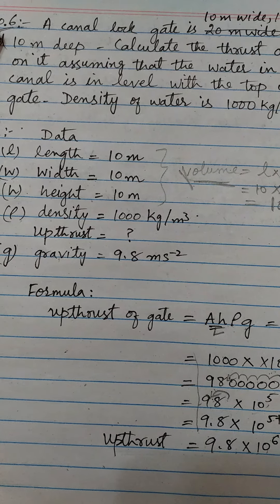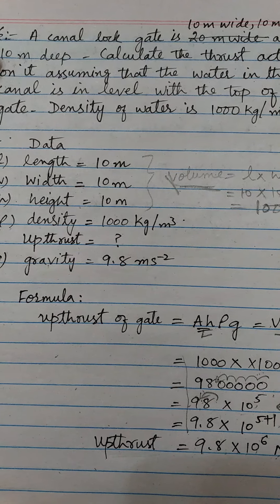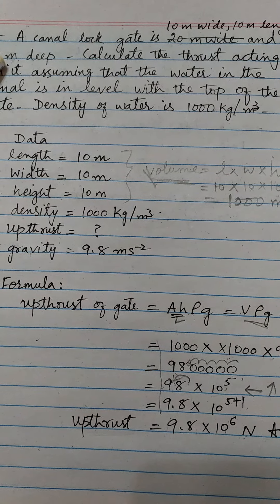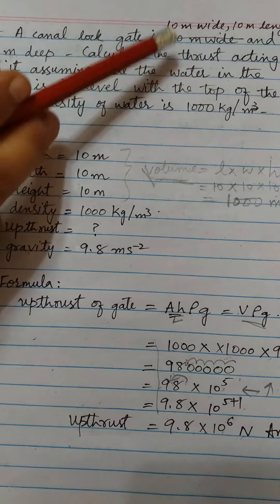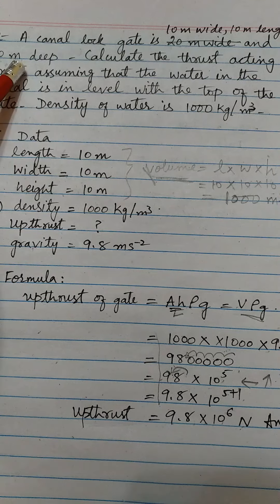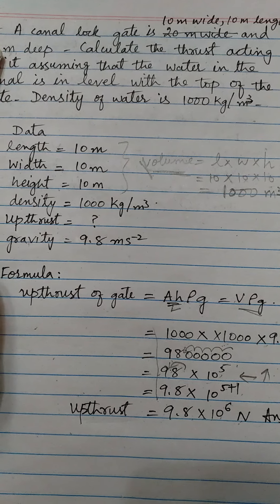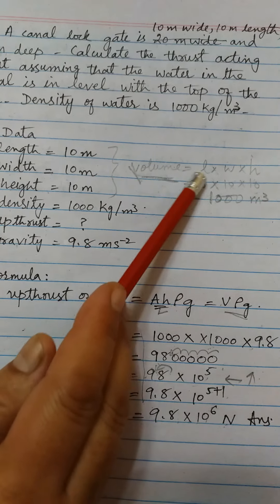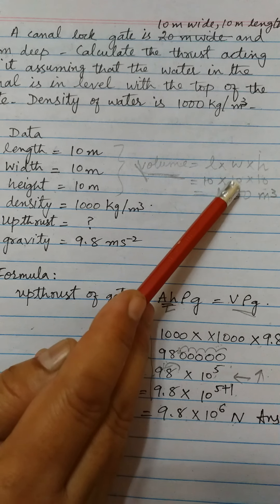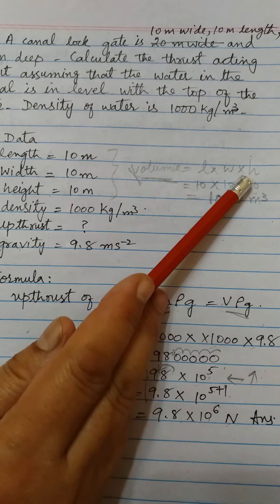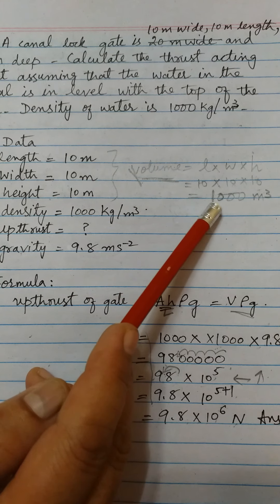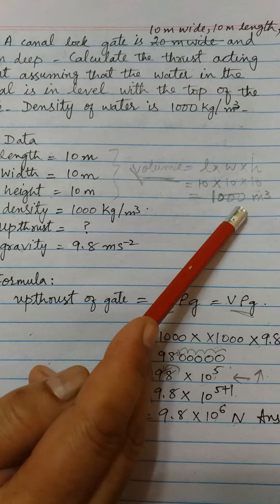Problem 10.6: A canal lock gate is 10 meters wide, 10 meters length, and 10 meters deep. Please note the correction here — it is 10 meters wide, 10 meters length, and 10 meters deep. Then our volume will be length into width into height: 10 × 10 × 10. Our volume will be 1000 cubic meters.